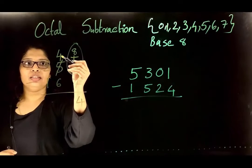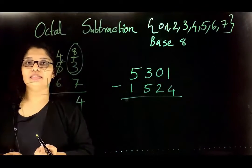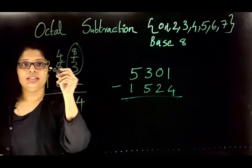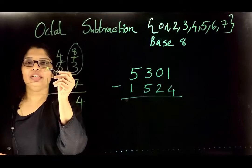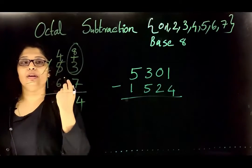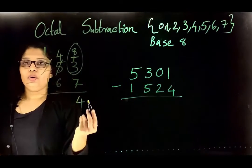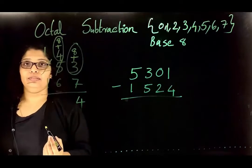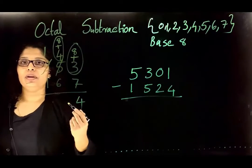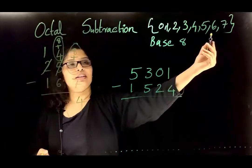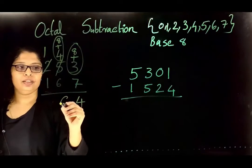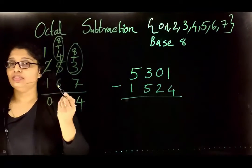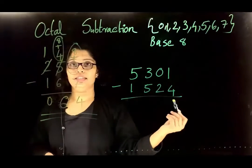Next, the value left is 4 and we subtract 6: 4 minus 6 is not directly possible, so we borrow from the neighbor. The neighbor has value 2, not equal to 0, so we can borrow. By borrowing, 2 minus 1 becomes 1. The borrowed value is 8, so the total is 8 plus 4, which is 12. 12 minus 6 is 6, and the representation for 6 is 6. Finally, 1 minus 1 is 0. This is the final answer of this octal subtraction.